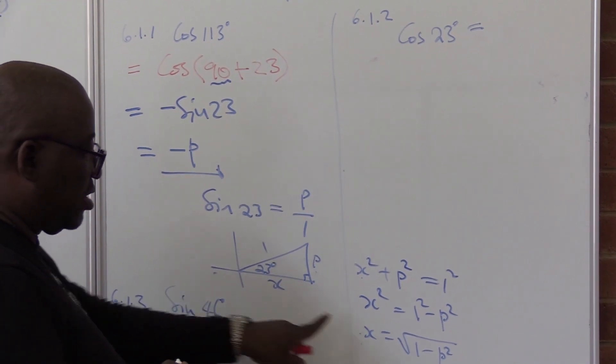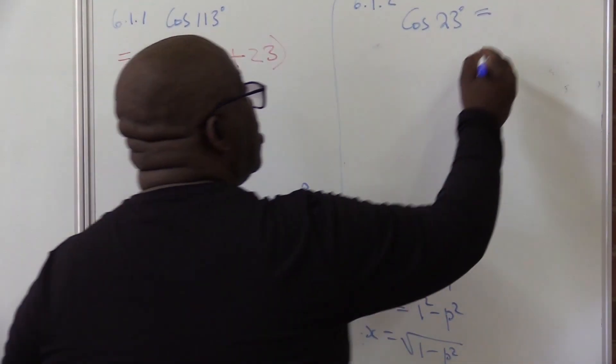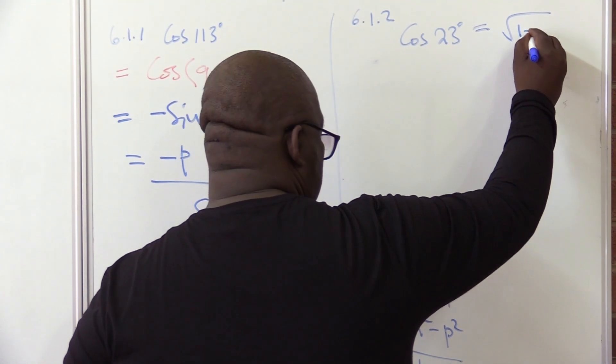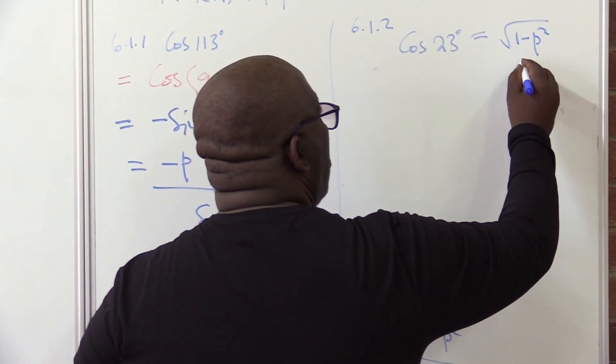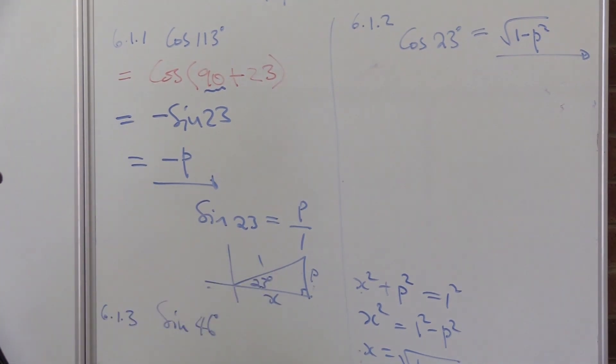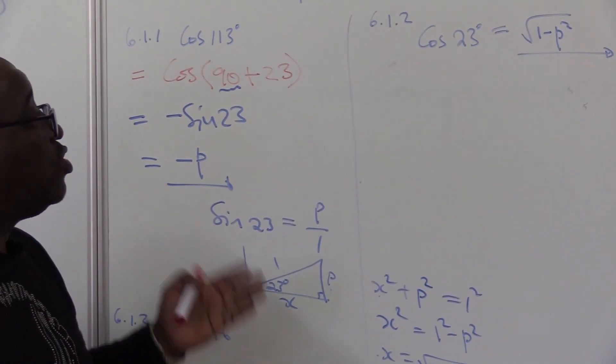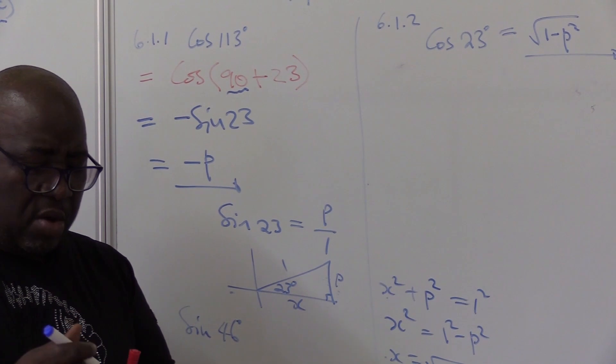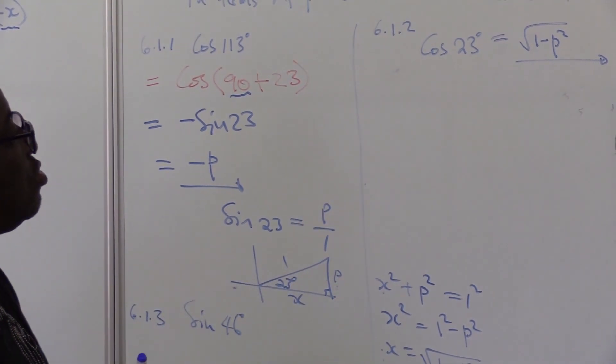Which is square root of 1 minus P squared over 1, which would be exactly that. That's one way of doing this problem, but I want us to do it the other way. I'm thinking of another way to do this problem.